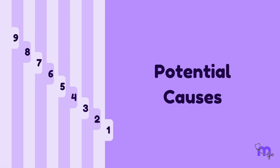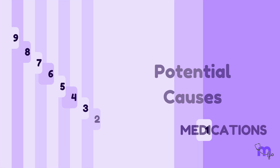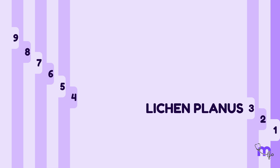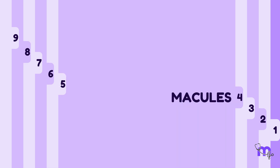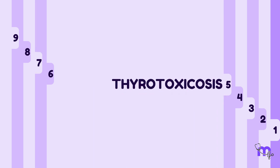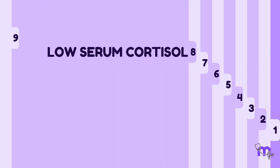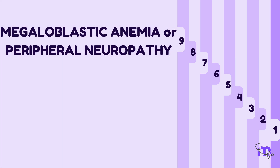There are nine potential causes to consider: intake of medications with melanogenetic potential, smoking, lichen planus, intraoral or perioral macules, thyrotoxicosis, hyperbilirubinemia, pituitary tumor or hyperadrenocorticism, low serum cortisol, and megaloblastic anemia or peripheral neuropathy.